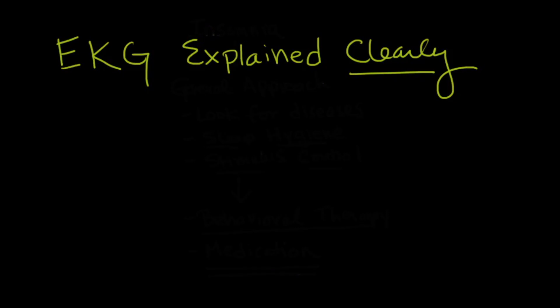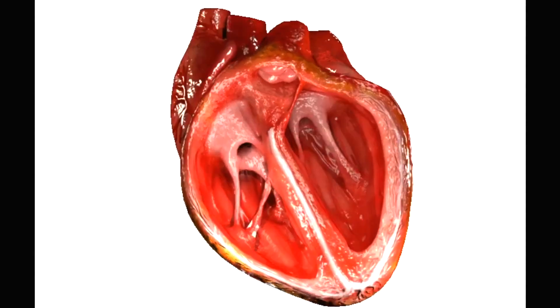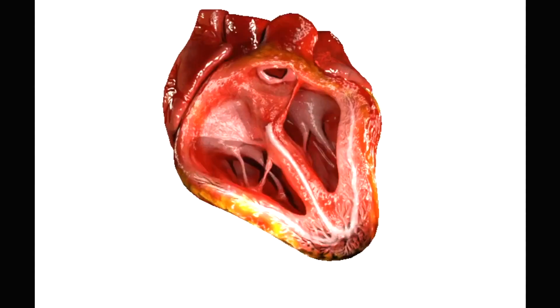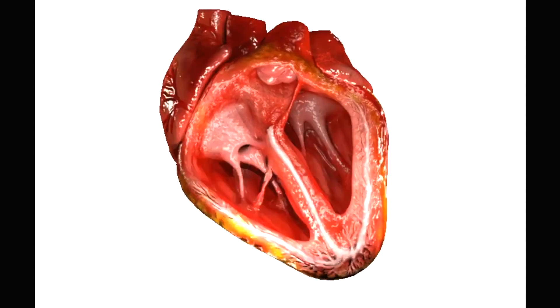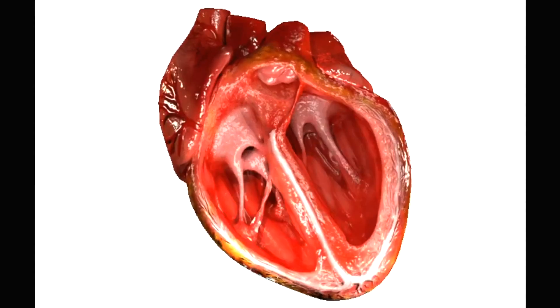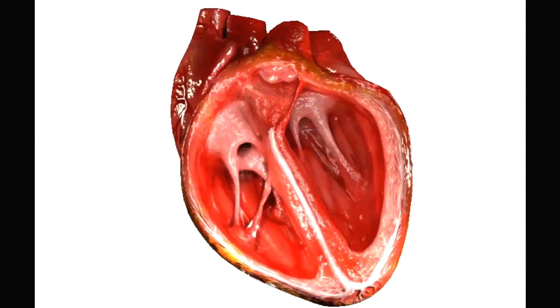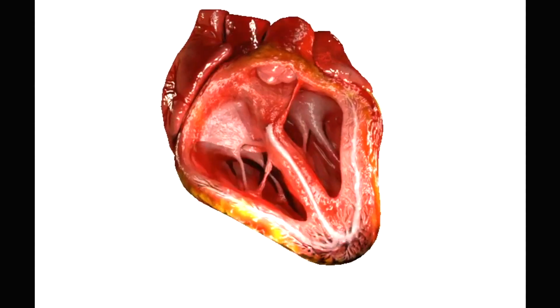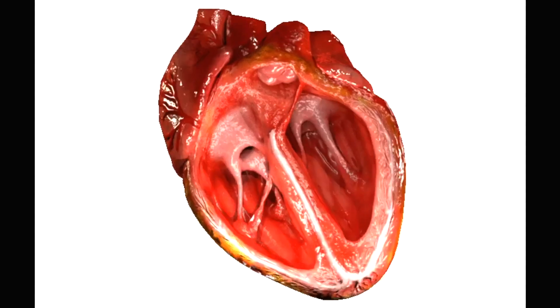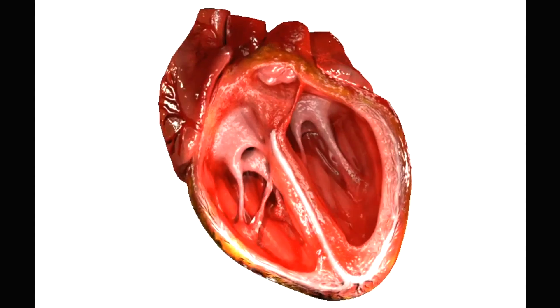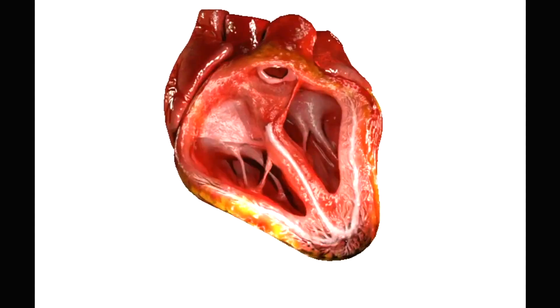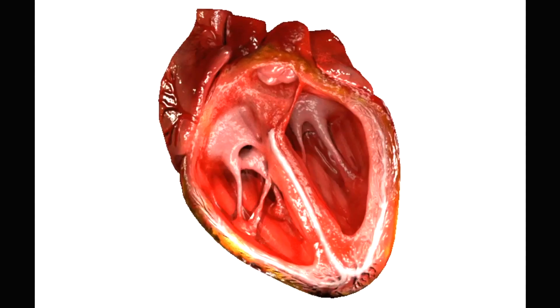So let's begin with anatomy. Here is an animation of the heart beating, and there are a number of things I want you to see so you'll understand this when we talk about the conduction system of the heart and the EKG. The EKG is a way of looking at the electrical activity of the heart, and it's really the electrical activity of the heart that is responsible for what we're seeing here.